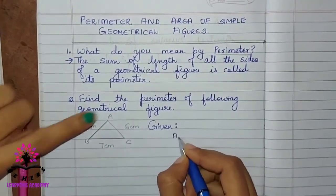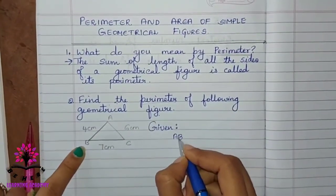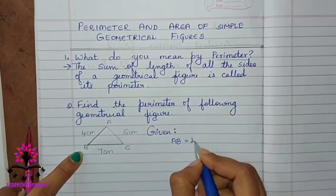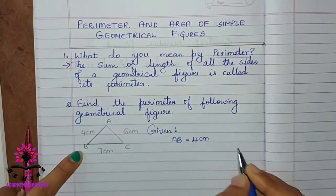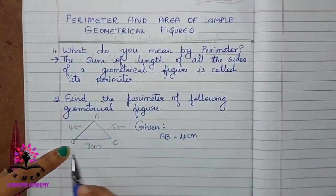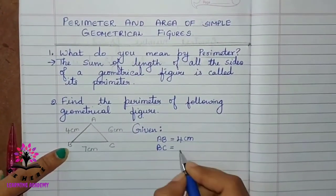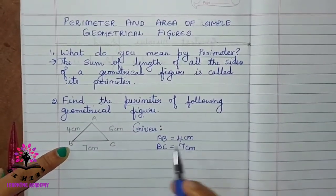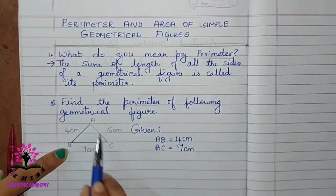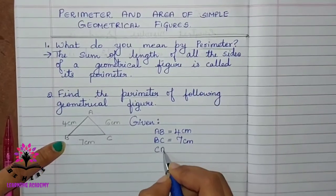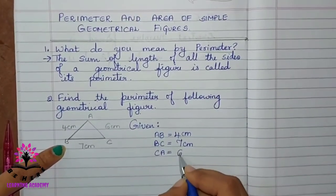Then, AB is the first side and it is equal to 4 cm. Then, BC is the next side that is 7 cm. Remaining side is CA. CA is equal to 6 cm.